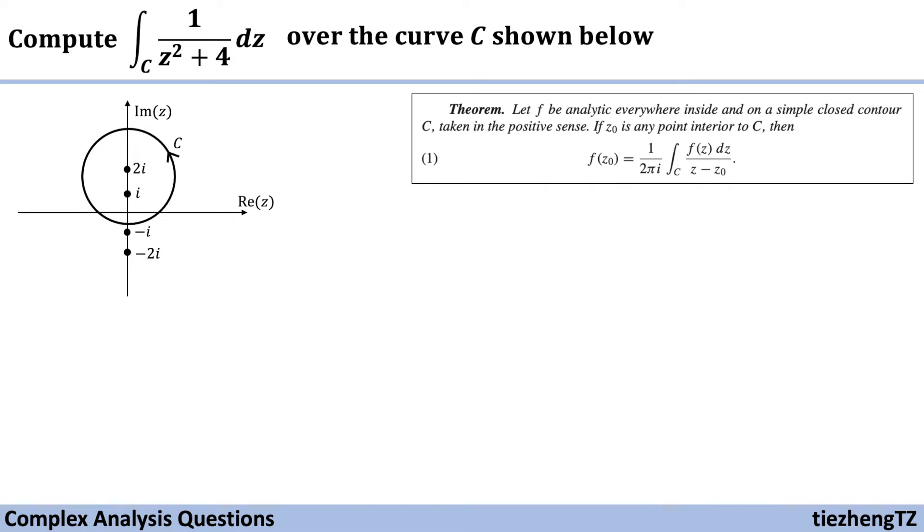The key point is that we need to use the given function and transform it to the integral function in the theorem by finding the appropriate z₀ and the f(z) function.